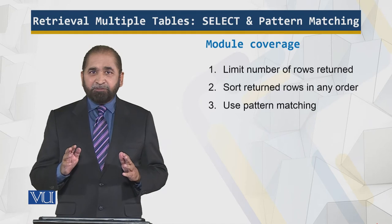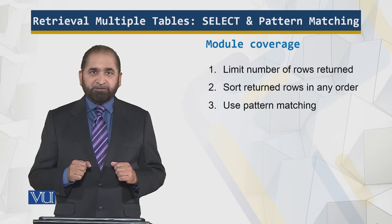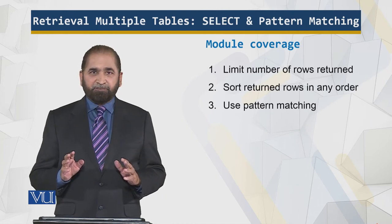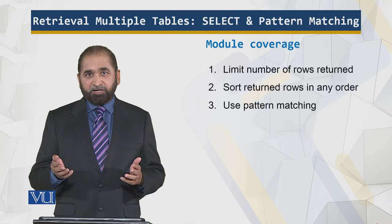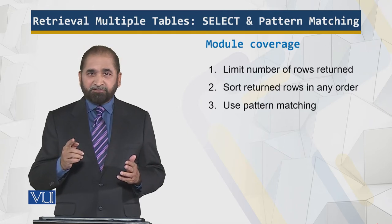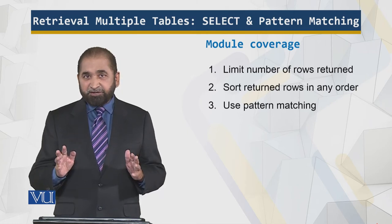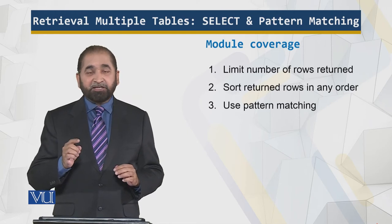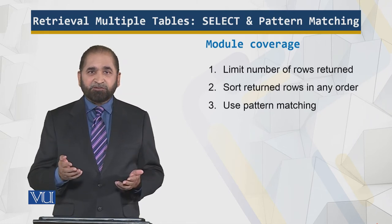The outline of this module covers the LIMIT command, which limits the number of rows returned. There are practical reasons for limiting rows, which we'll explain. We'll also cover how to sort returned rows in ascending or descending order depending on the requirement — requirements that are not efficiently supported by a text file, which is why we have a database. Finally, we'll look at pattern matching for when you are not looking for an exact match.